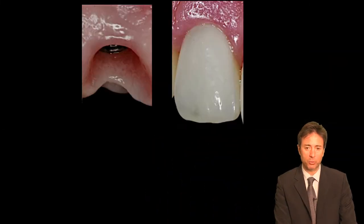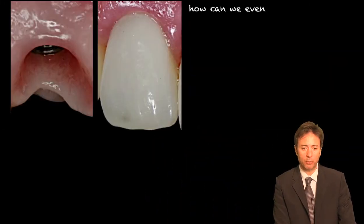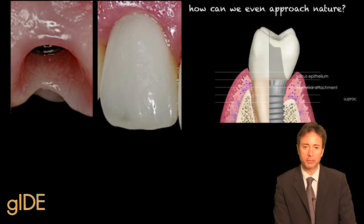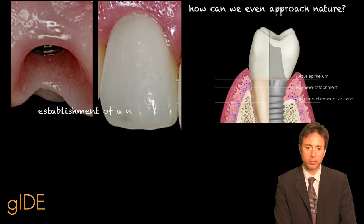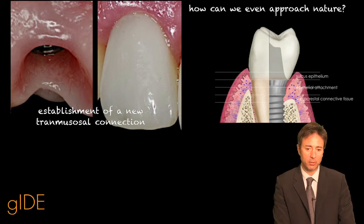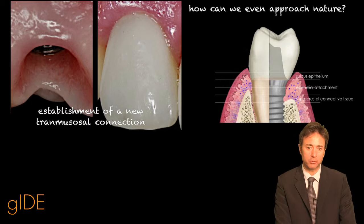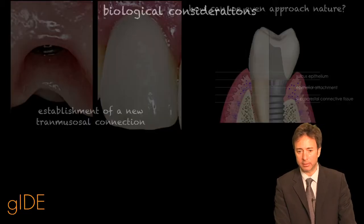We are going to speak about abutment design and soft tissue considerations. We are mainly going to focus on the transmucosal contour and the establishment of the new transmucosal connection when we place an implant.